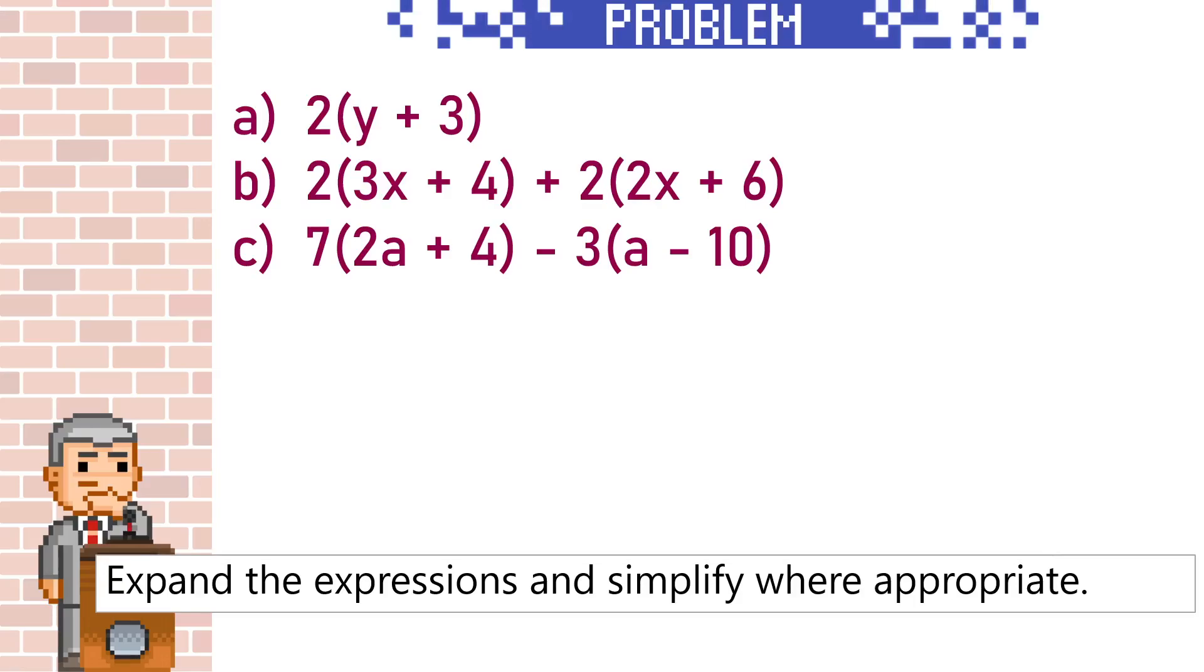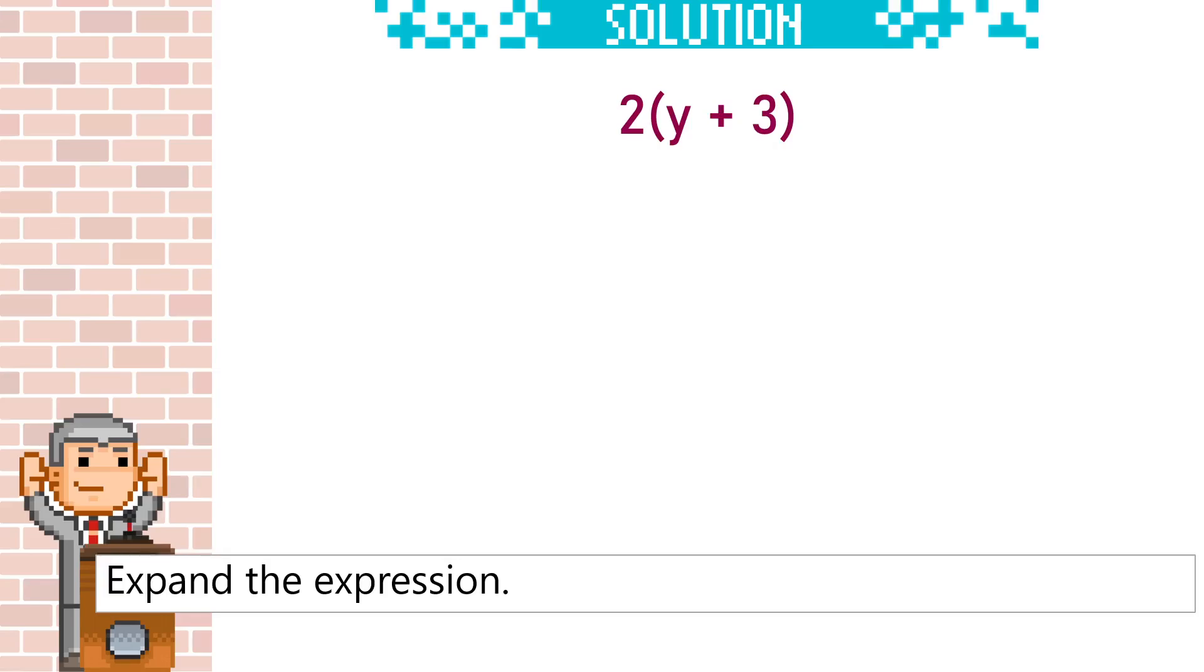Let's work through these questions. When we expand brackets, we're multiplying the term on the outside by every term on the inside. 2 times y is 2y, 2 times 3 is 6 or plus 6. The bracket expands to 2y plus 6.